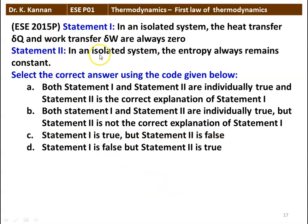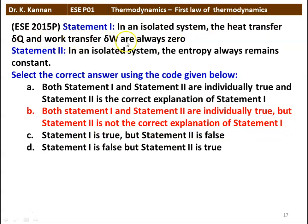Next question again, two statements. Statement 1: in an isolated system, heat transfer δQ and work transfer δW are always zero. Statement 2: in an isolated system, entropy always remains constant. Both statements are individually true, but statement 2 is not the correct explanation for statement 1. In an isolated system, the system is not interacting with the surroundings, so there is no heat transfer and no work transfer. When there is no energy transfer, entropy is also constant, but statement 2 is not the explanation for statement 1.